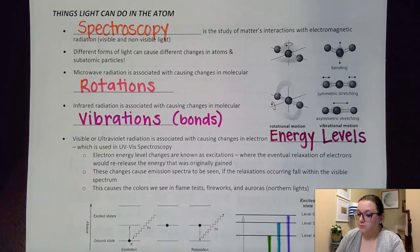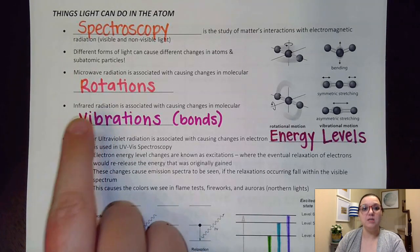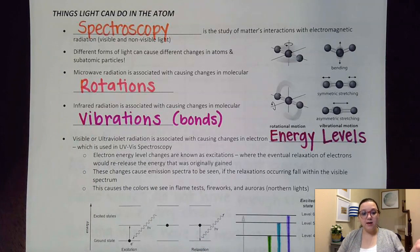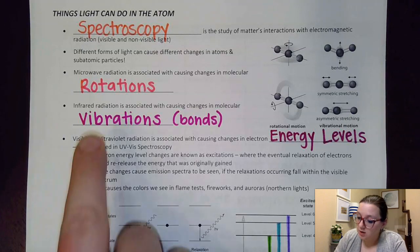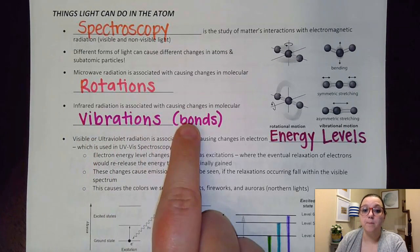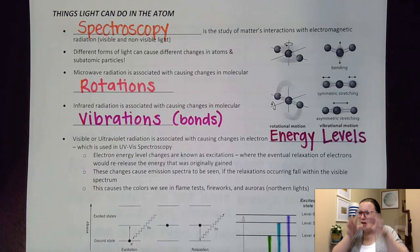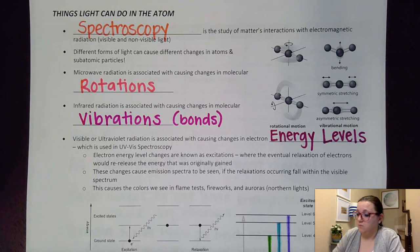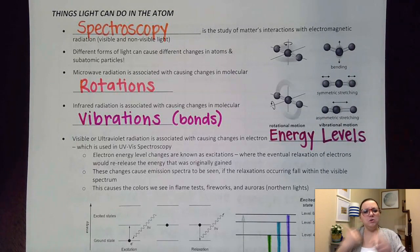Our next type of radiation here is infrared radiation. You notice that that has an increase in energy if you're thinking about our electromagnetic spectrum. So here having an increase in energy, I'm going to see a little more effect being caused by this particular type of radiation. Here, infrared radiation causes vibrations in the bonds. So whereas the first one we just had molecular rotations, now we're actually starting to impact stuff that's inside of the molecule. We're starting to cause stretching and bending of those bonds.